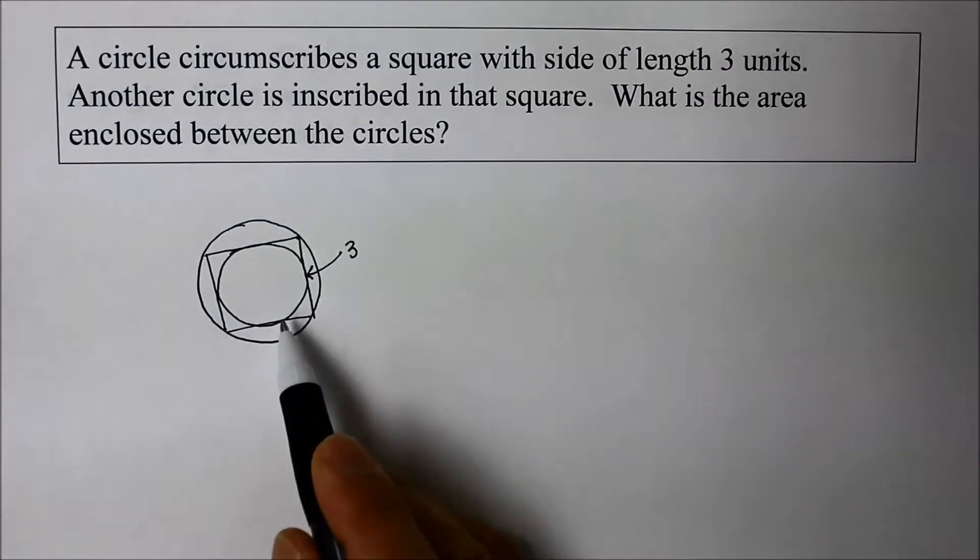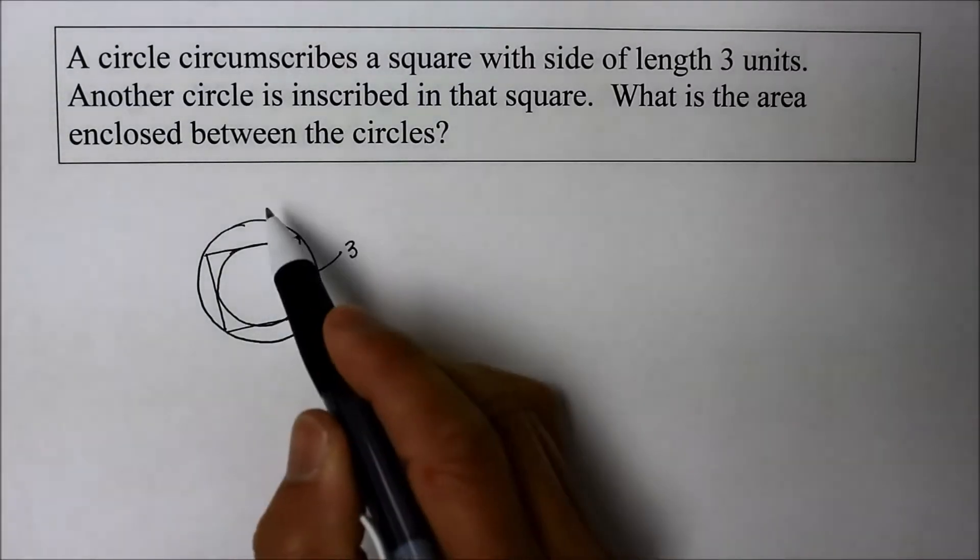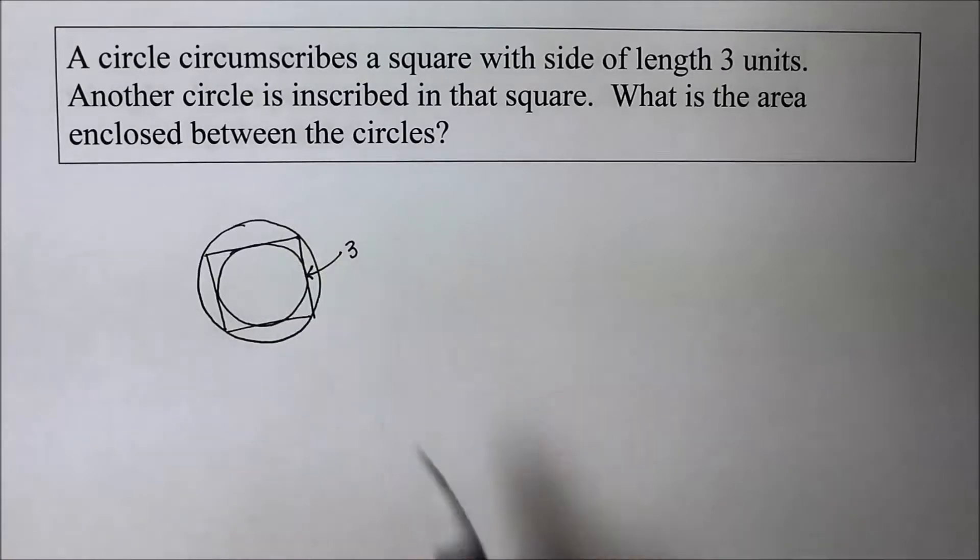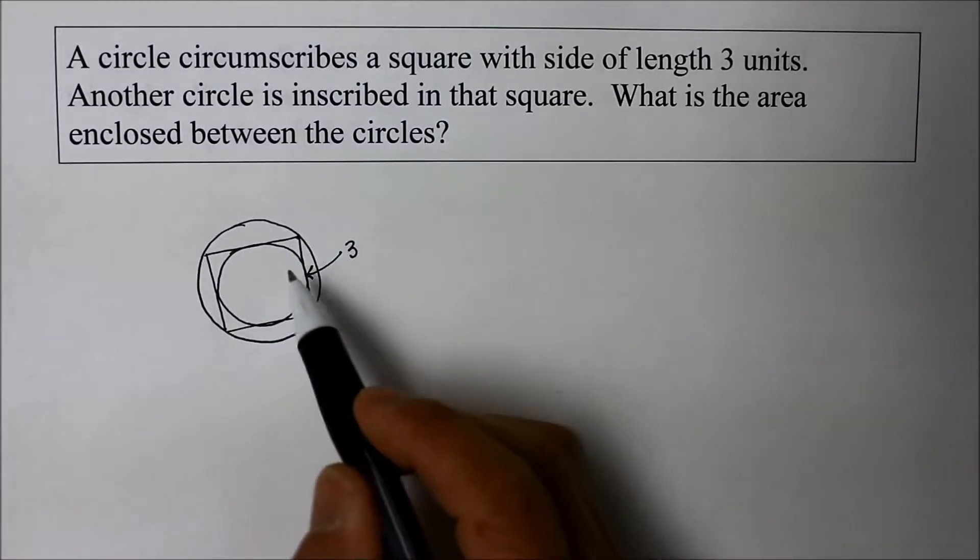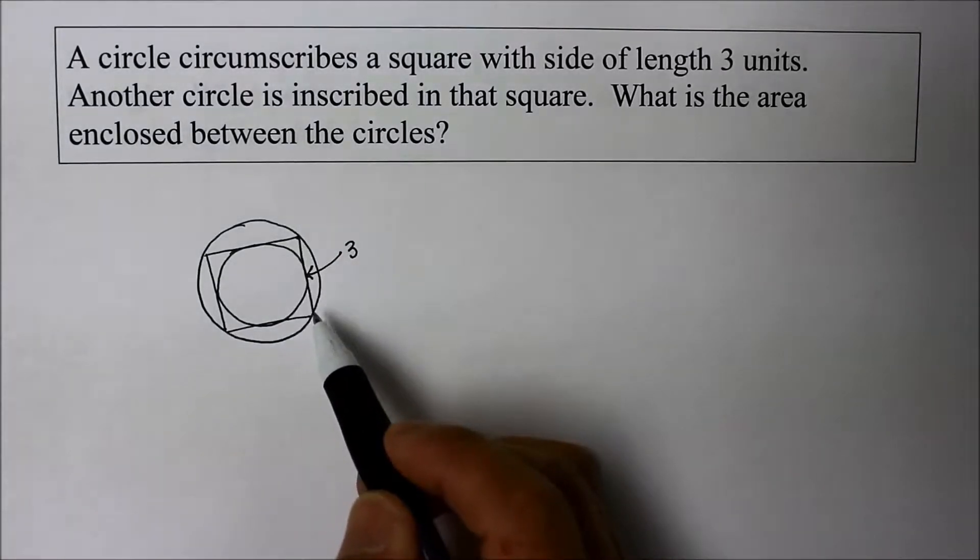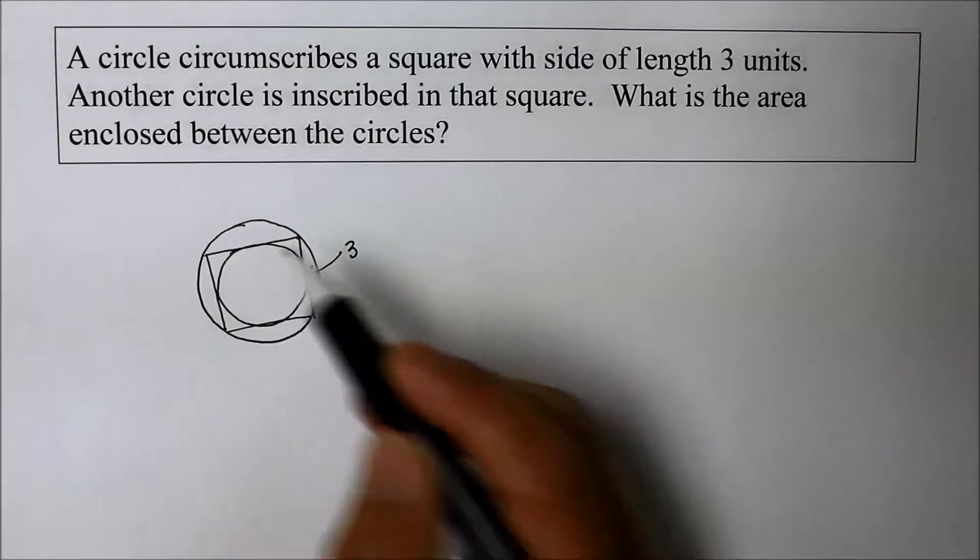Okay, kind of looks like a circle. And the question is, what is the area enclosed between the two circles? It has nothing to do with the square anymore. They're just asking, what is the area between the two circles?